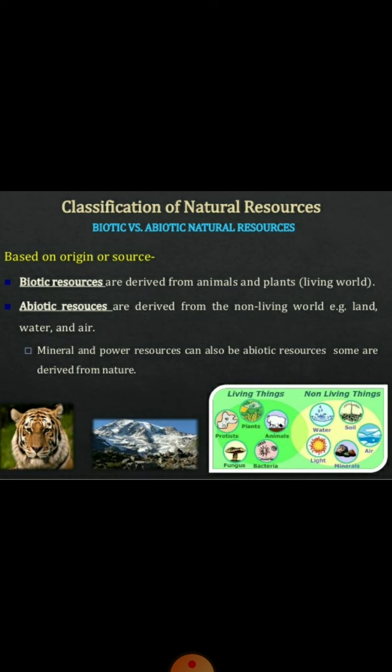Source of origin — Biotic resources: These resources are obtained from living materials such as plants and animals. Abiotic resources: These resources are obtained from non-living and non-organic material. These include resources like land, water, air and metals like gold, iron, copper and silver.